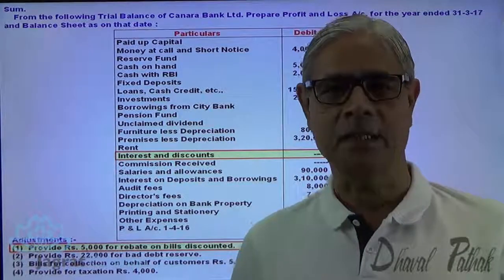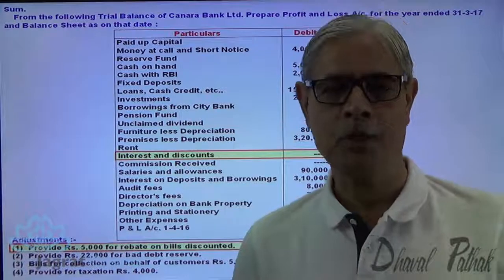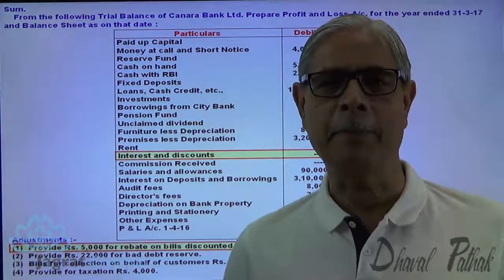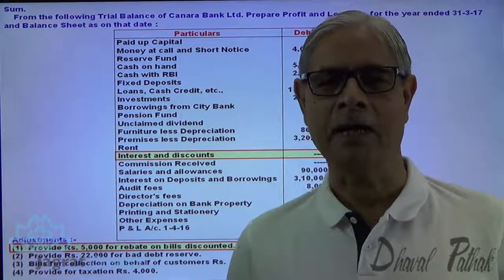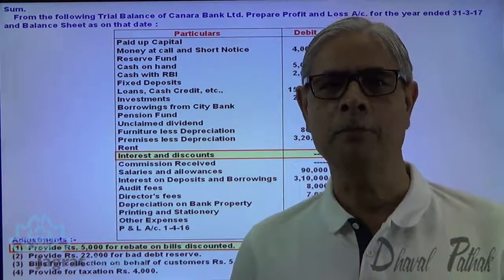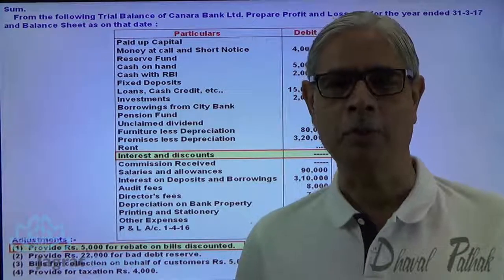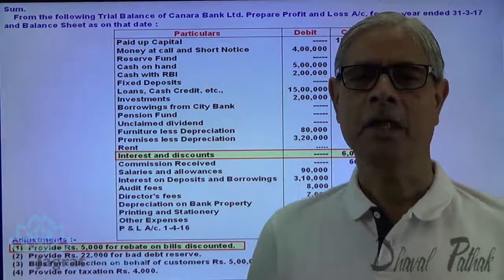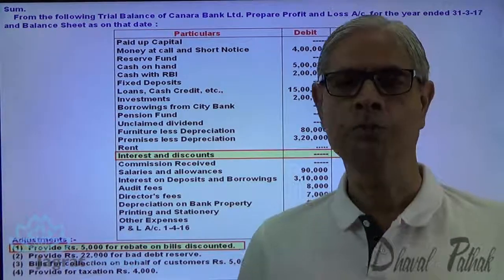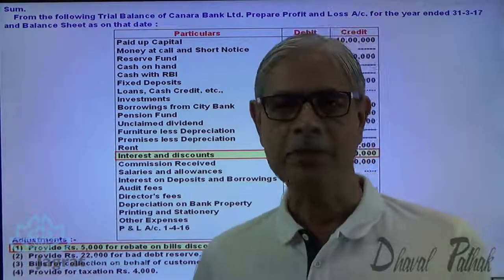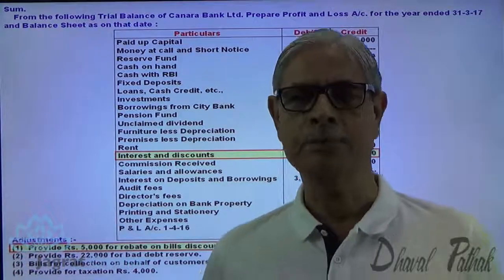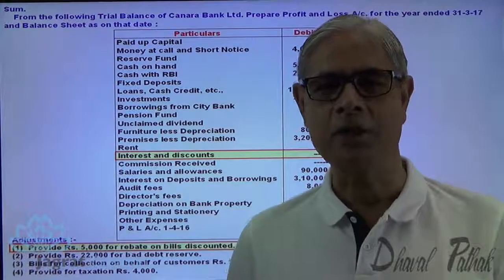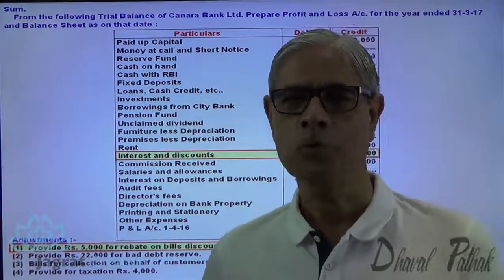Now I want to start with this sum. First of all, I will prepare schedules required for the balance sheet, then I will also prepare the schedules required for the profit and loss account. As you know, the balance sheet holds schedules 12 to 15, and schedules 13, 14, 15, 16 are the schedules for the profit and loss account.